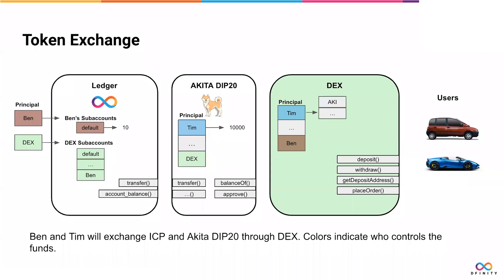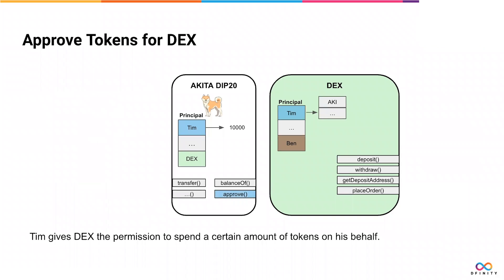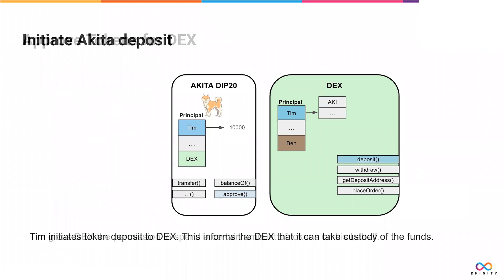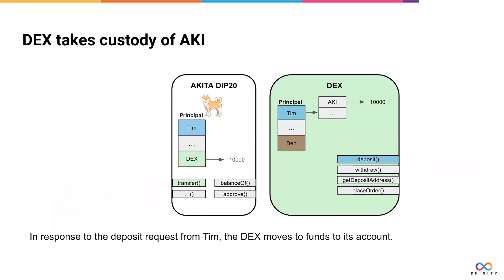We'll go through how the DEX works by following the calls that are made during a normal user interaction. First, Tim uses Approve on the DIP20 canister to allow the DEX access to funds. Tim calls Deposit on the DEX to register those approved funds with the Exchange. The DEX will then transfer the approved funds to its own account on the DIP20 canister and updates Tim's balances.